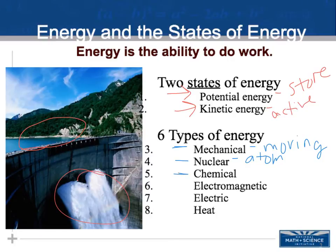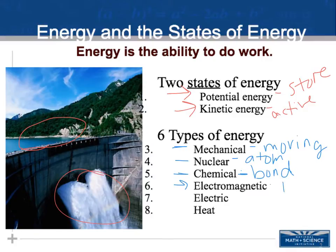Chemical energy is the one we're going to focus on most today. Chemical energy is stored in the chemical bonds and can be released during chemical reactions. Electromagnetic energy is found in electromagnetic waves like radio waves or microwaves. Electrical energy is based on the movement of electrons from point A to point B, usually along a wire.